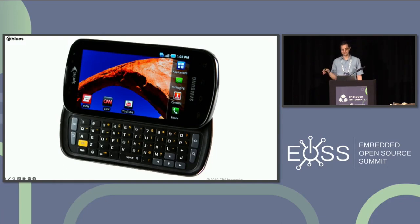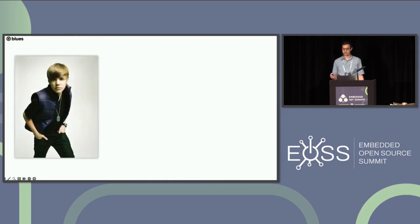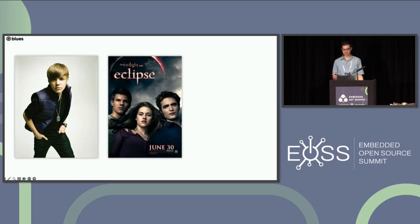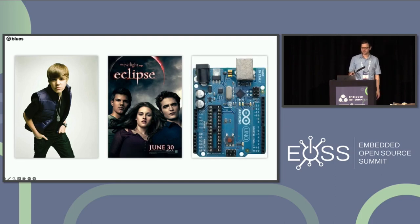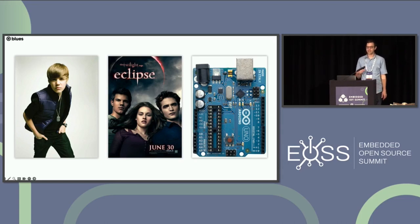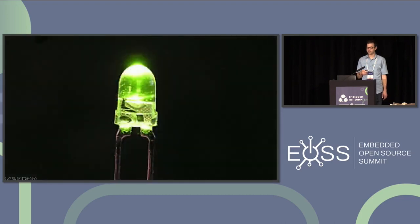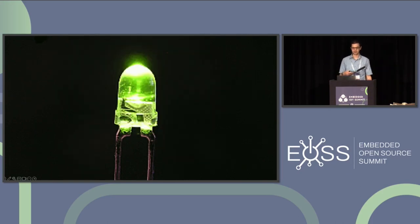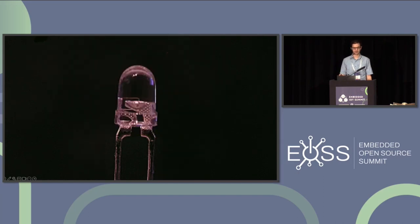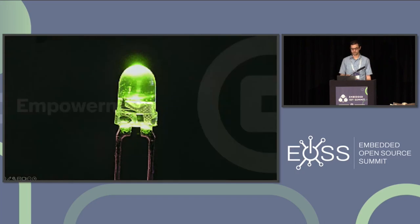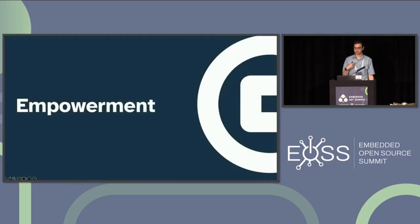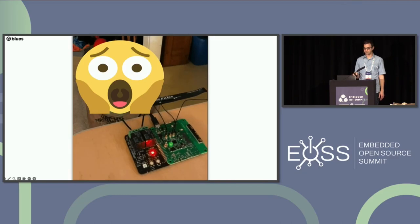I want to fast forward now to about 2010. This beauty was considered by CNET as the best smartphone on the market — the age of Justin Bieber and Twilight Eclipse. But more importantly, it was in 2010 that the Arduino Uno was released. Within about a year of that, I was introduced to what I consider the second instance of true empowerment in my career — blinking LED lights. For the first time, I could write code that started to interact with the physical world.